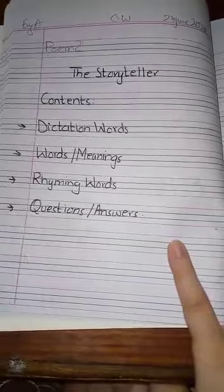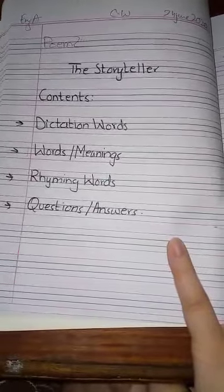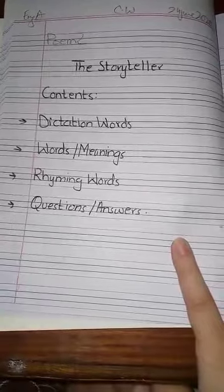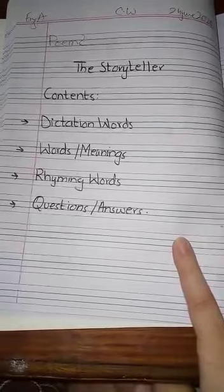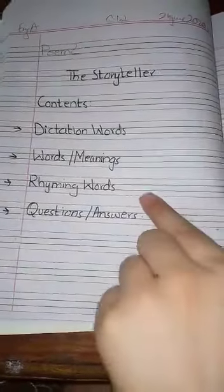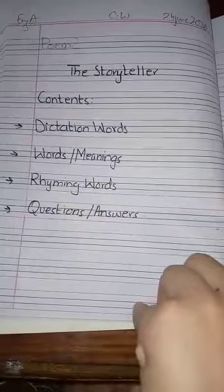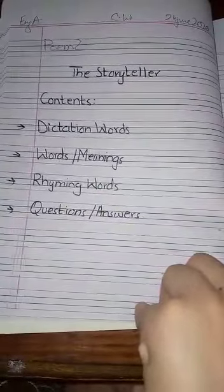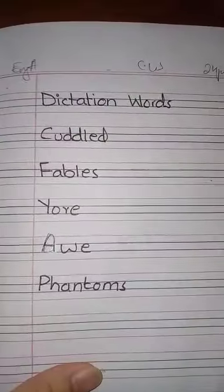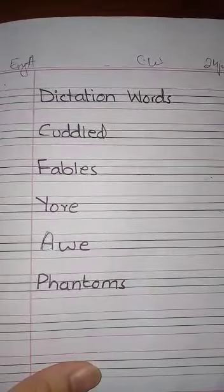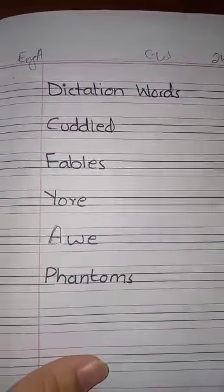Poem number two: The Storyteller. Contents include: dictation words, word meanings, rhyming words, and question answers on the next page. On the next page you will give the heading of dictation words.